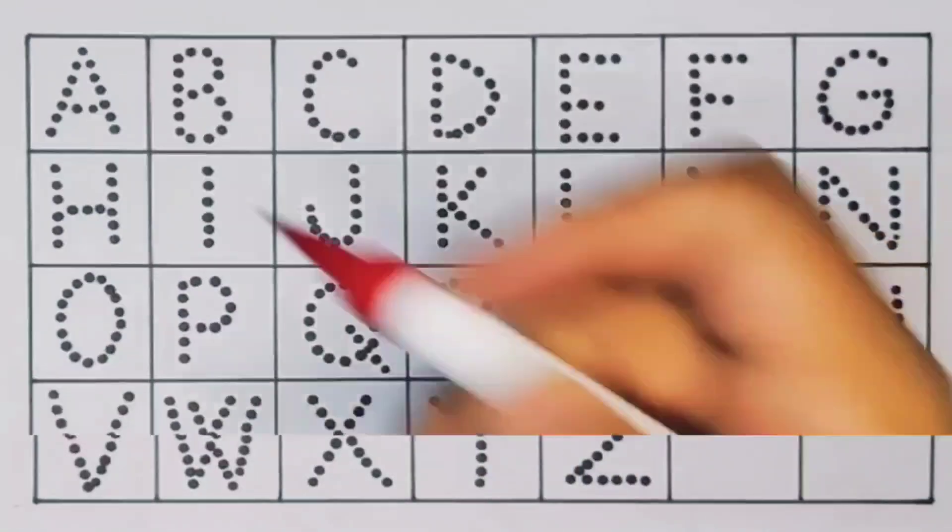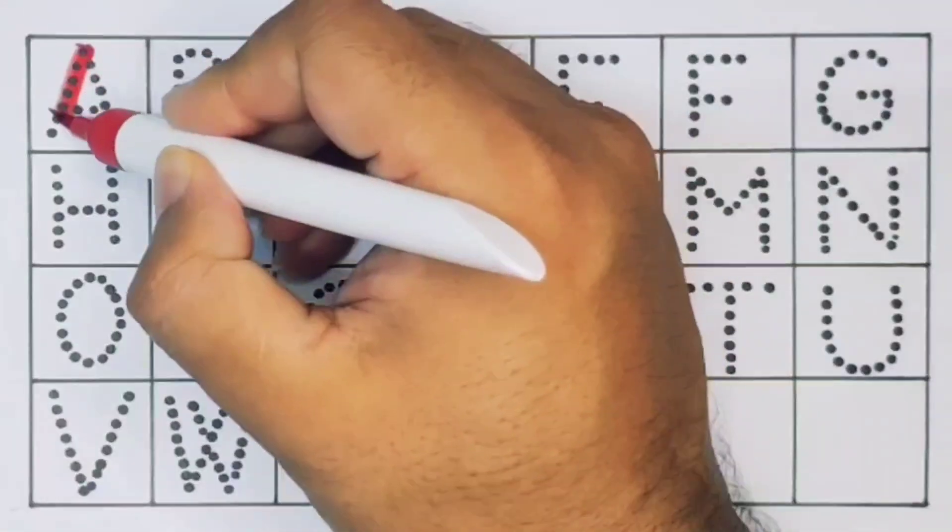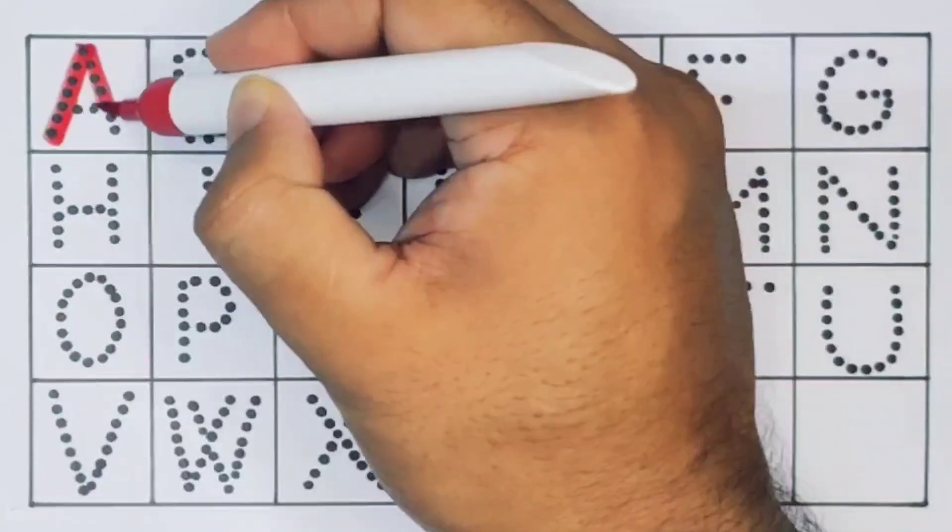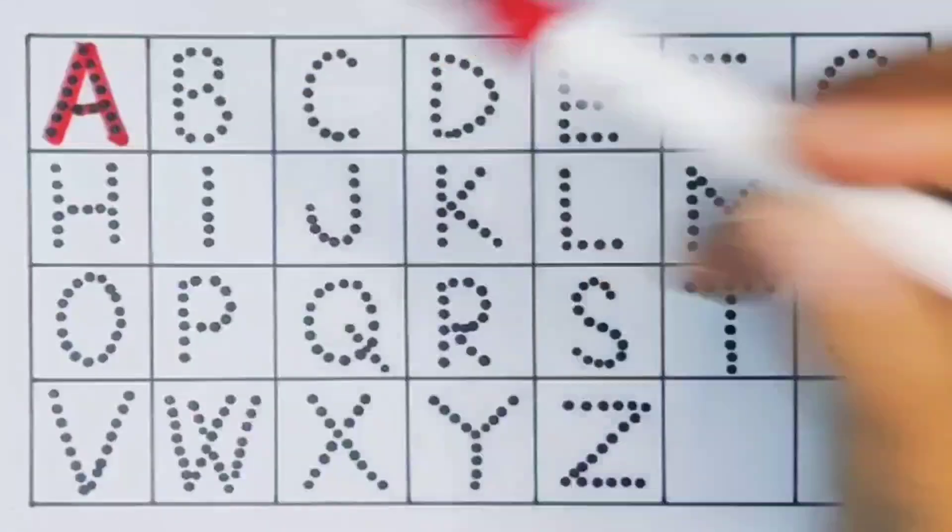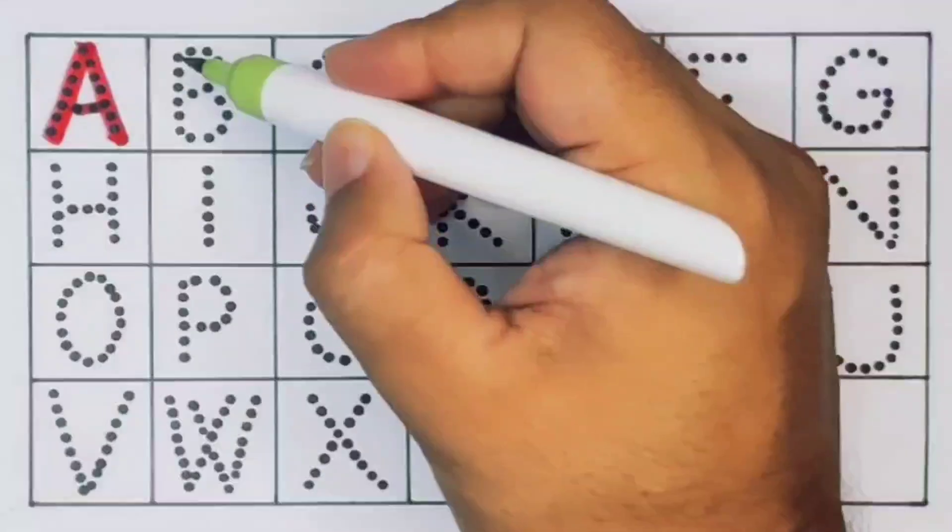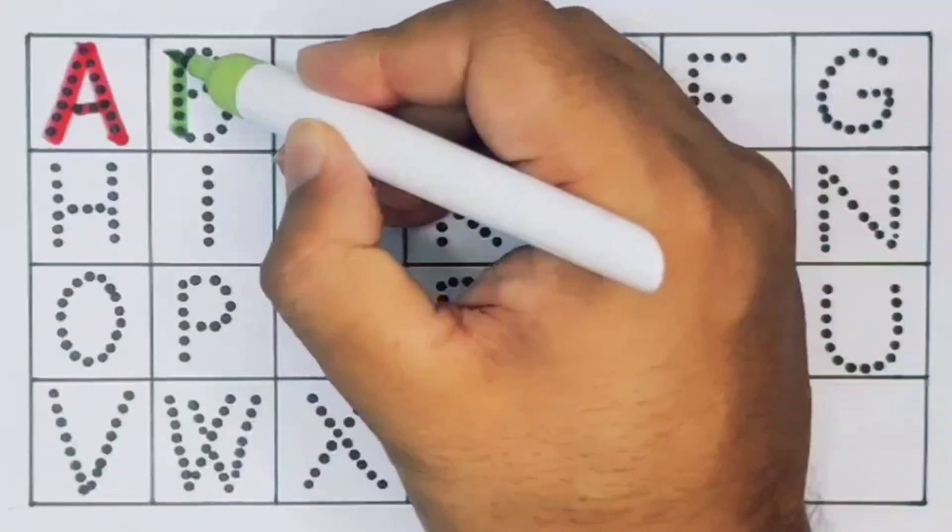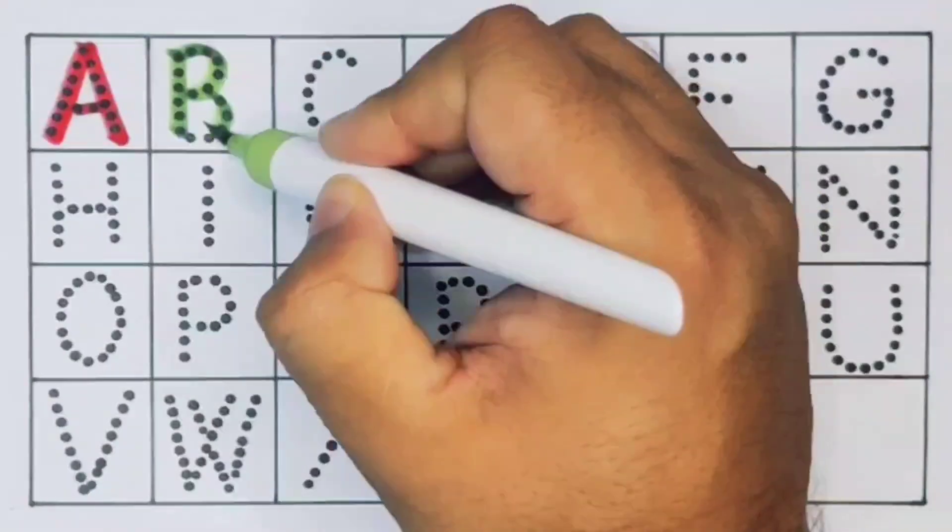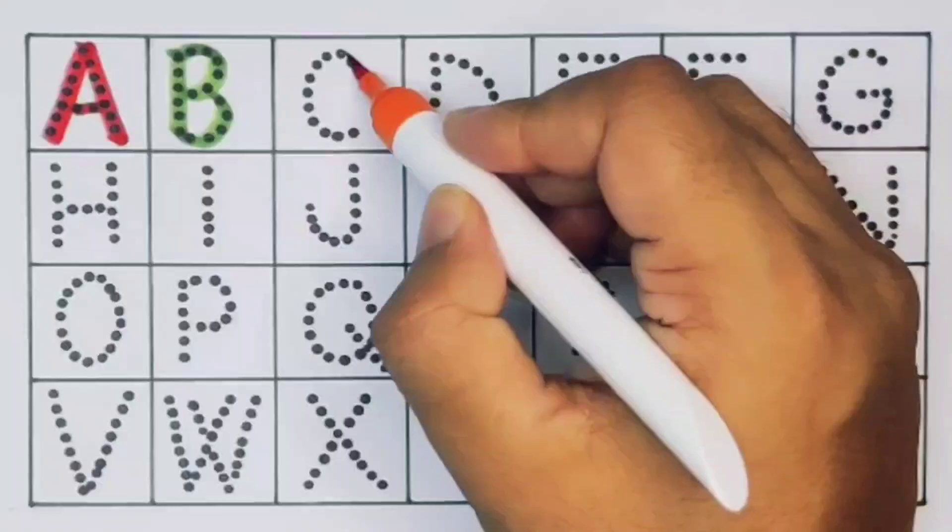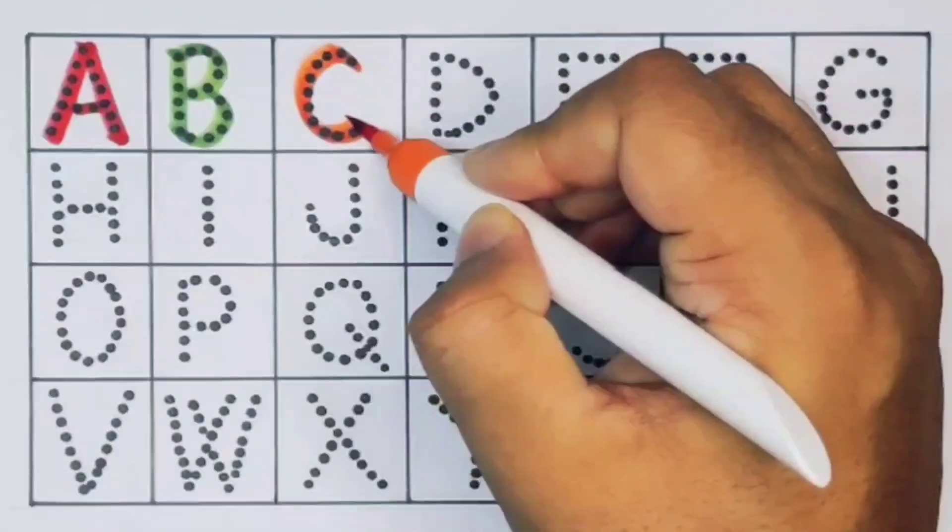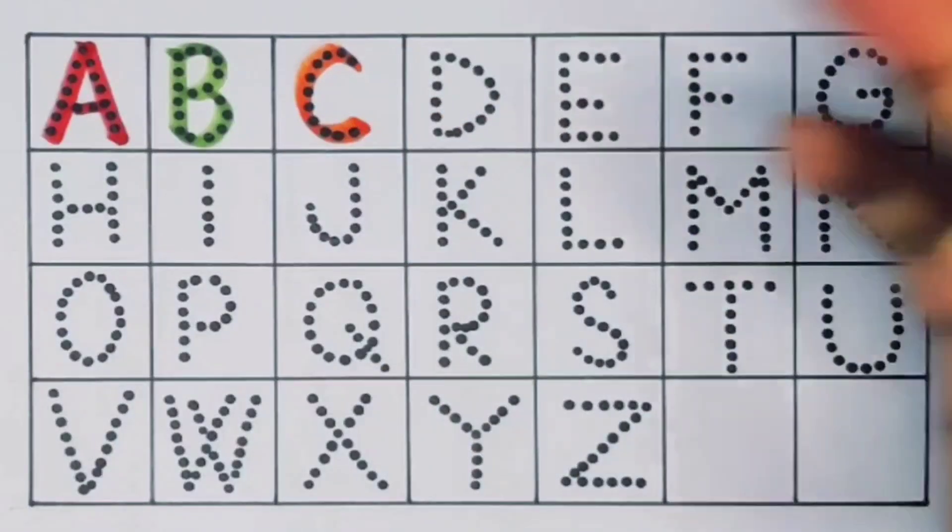To set, first A. A for apple. Next kids, B. B for ball. Next C. C for car. Next D. D for doctor.